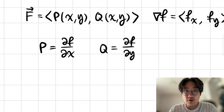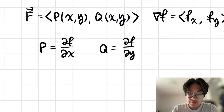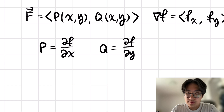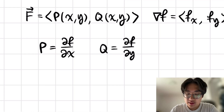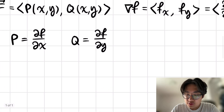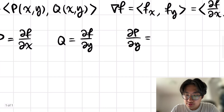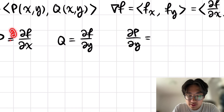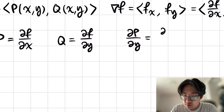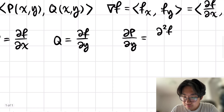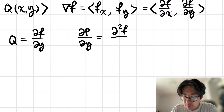Now we want to employ Clairaut's theorem, which states that the second-order partial derivatives are equal for a function. To do that, we need to take the partial derivative of the opposite variable — the one that doesn't appear. So for P, we take the partial derivative with respect to y, and for Q, vice versa, we do it for x. So partial P partial y is equal to the partial of partial f partial x with respect to y, which is partial squared f over partial y partial x.